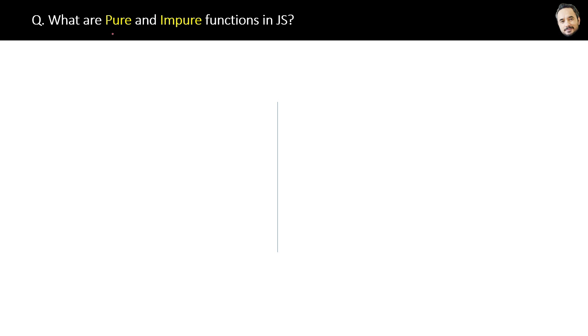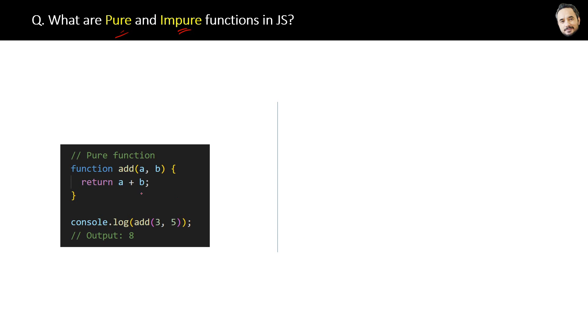What are pure and impure functions in JavaScript? You know the meaning of pure and impure, right? For example, this is a normal add function. When we call this function with some arguments, it will give this output. Now, even if we call this function 100 times with the same arguments